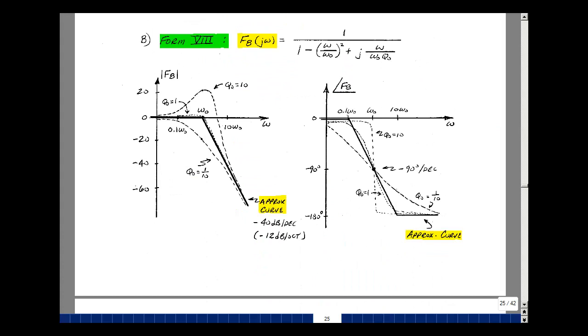And lastly, form 8 would be the reciprocal of form 7. So 1 over the quantity [1 minus (omega/omega naught)² plus j(omega/omega naught q naught)]. As we showed earlier in the chapter, when you take the reciprocal, you simply take the mirror image of what you had previously. So for form 7, we would find omega naught at 0 dB, and we were increasing above omega naught. Now we're going to be decreasing at a slope of minus 40 dB per decade or minus 12 dB per octave.